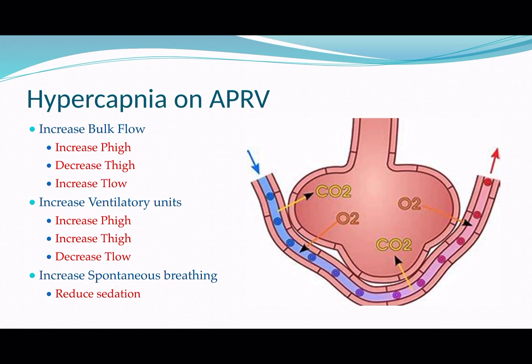You can also decrease T-high, which increases the number of releases per minute — effectively increasing respiratory rate and therefore minute ventilation. Another option is increasing T-low, which allows more gas to exhale out into the ventilator during each release, washing out more CO2 and effectively increasing tidal volume. These are the key levers for increasing bulk flow.